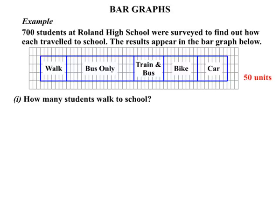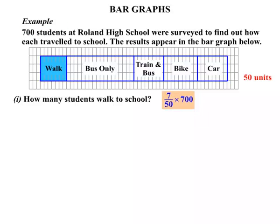How many students walk to school? We look at our walk section on the bar graph and find by measurement that there are 7 units across — 7 units out of the total of 50 units. So the fraction of people who walk is 7/50. Because we know there are 700 students, we find 7/50 of 700, which gives us 98. So 98 students walk to school.